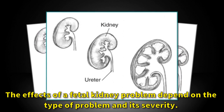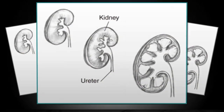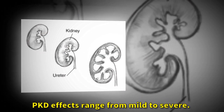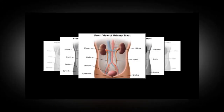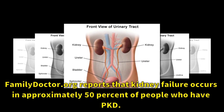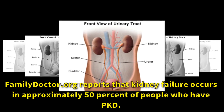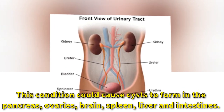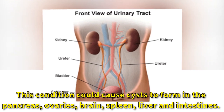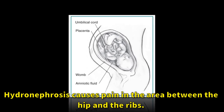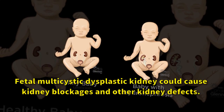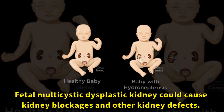The effects of a fetal kidney problem depend on the type of problem and its severity. PKD effects range from mild to severe. After birth, PKD may cause high blood pressure. FamilyDoctor.org reports that kidney failure occurs in approximately 50% of people who have PKD. This condition could also cause cysts to form in the pancreas, ovaries, brain, spleen, liver, and intestines. Hydronephrosis causes pain in the area between the hip and the ribs. Fetal multicystic dysplastic kidney could cause kidney blockages and other kidney defects.